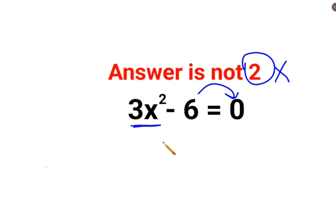So, how does that happen? The first thing we will shift is minus 6. When you shift minus 6 on the other side it becomes plus 6. Then, what we do is we divide both sides by 3.